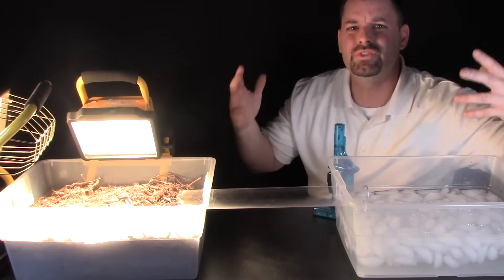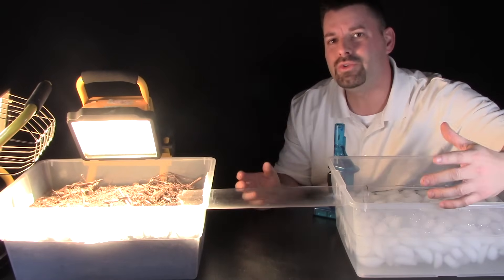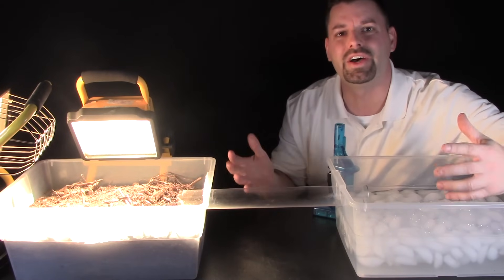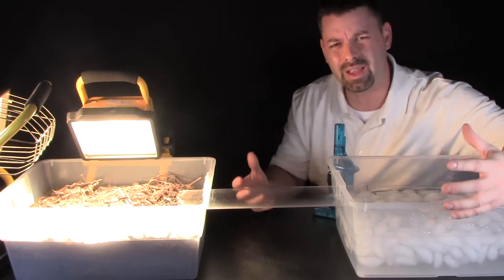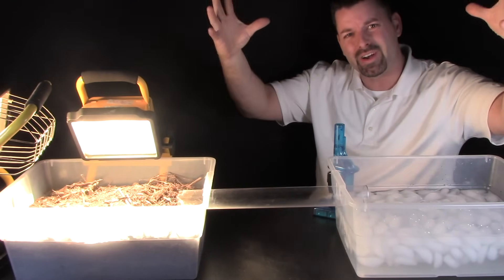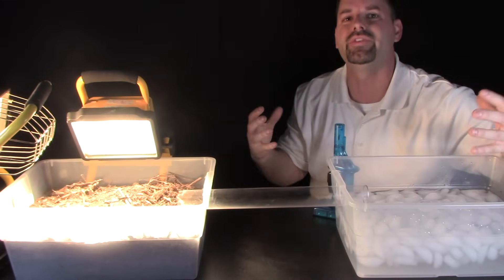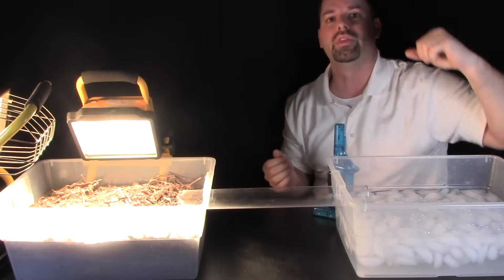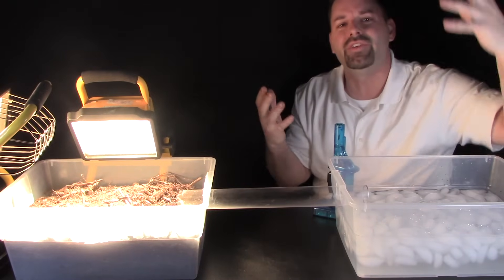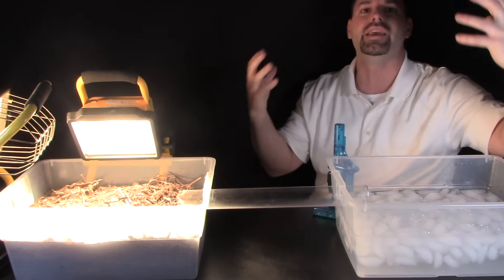So think about what we have just shown you. We have shown you that when we heat things unevenly that is what makes the air move. Think about that as our planet. Our planet has different areas being heated unevenly. The sun is really hot around the equator and it is really cold around the poles. Well, that uneven heating of the earth makes the air move.